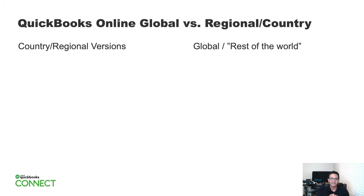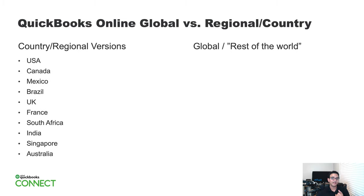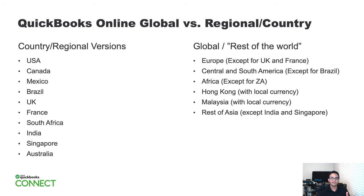QuickBooks Online Global Edition is a little bit different than the regional or country editions. If you're running a company based out of USA, Canada, Mexico, Brazil, United Kingdom, France, South Africa, India, Singapore, or Australia, all of those will have their own country or regional editions. For the rest of the world, we're going to be working on the global or international edition, which includes the rest of Europe, most of Central and South America except Mexico and Brazil, most of Africa except South Africa. Hong Kong, Malaysia, and the rest of Asia except India and Singapore would also qualify for this global or international edition of QuickBooks Online.